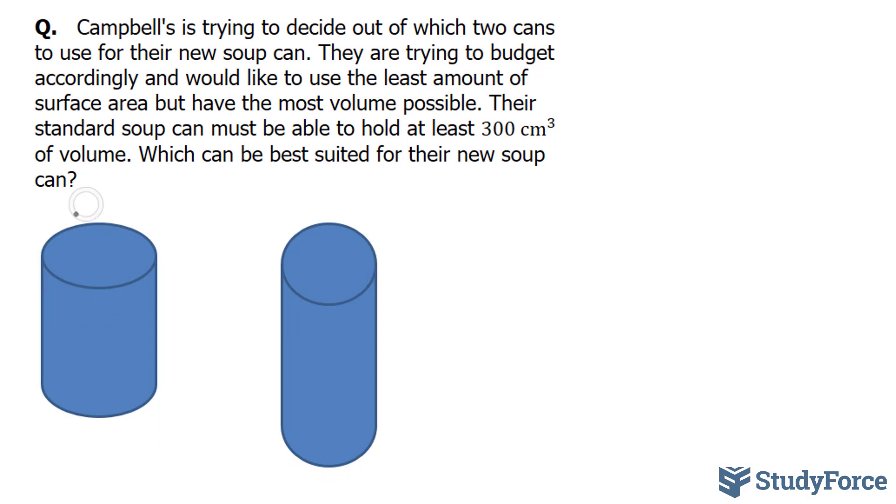They are trying to budget accordingly and would like to use the least amount of surface area, but have the most volume possible. Their standard soup can must be able to hold at least 300 centimeters cubed of volume. Which can be best suited for their new soup can? So what we have here is can A and can B, and the dimensions are not shown, but I'll provide them now. The radius for this one is 4 and the height is 8. And the radius for this one is 2 and the height is 12.